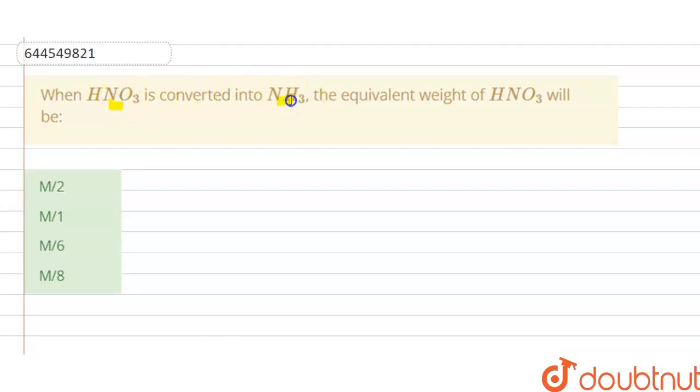When HNO3 is converted into NH3, the equivalent weight of HNO3 will be? A, B, C, D options are given here, so we have to choose the correct option. So the solution of this question is, we have the HNO3...